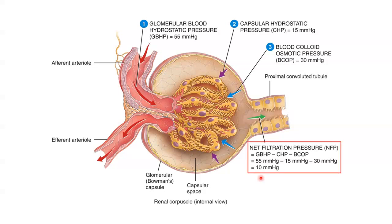We sum these three pressures to determine net filtration pressure: we take the pressure that promotes filtration and subtract the two that oppose it. Typically this gives a value of 10 mmHg, a positive number meaning filtration will occur. If this number were negative or zero, there would be a stronger pressure drawing water and solutes back into the glomerulus rather than filtering substances out.